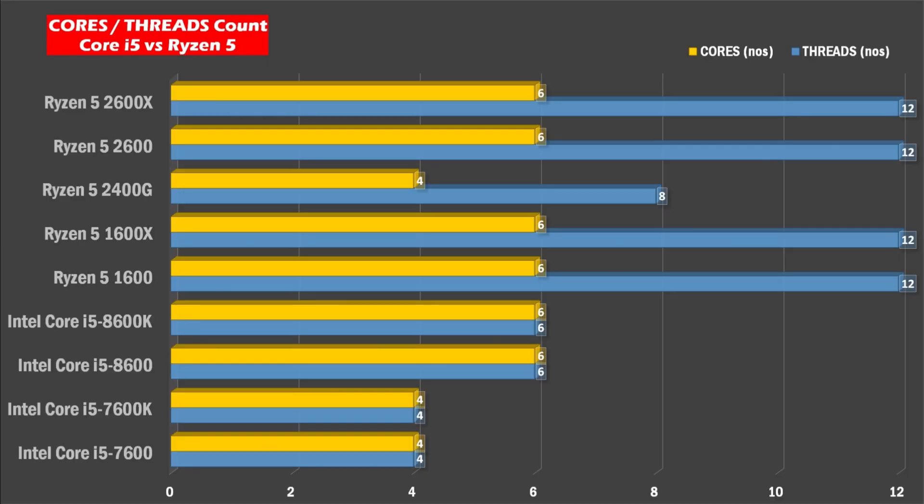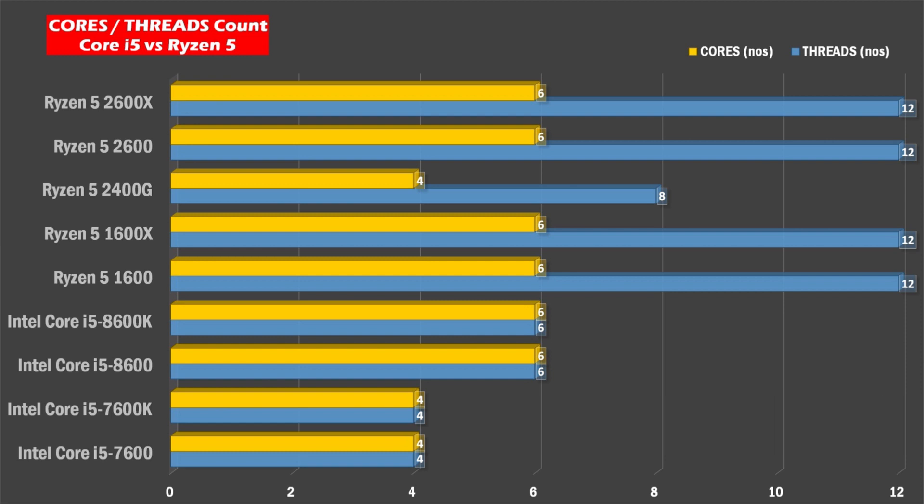The mid-range tier is Intel i5 and AMD Ryzen 5. Intel i5 has 4 cores and 8 threads, while the Ryzen 5 processor has 6 cores and 12 threads. So for multi-threaded applications, Ryzen 5 is very useful at this tier.